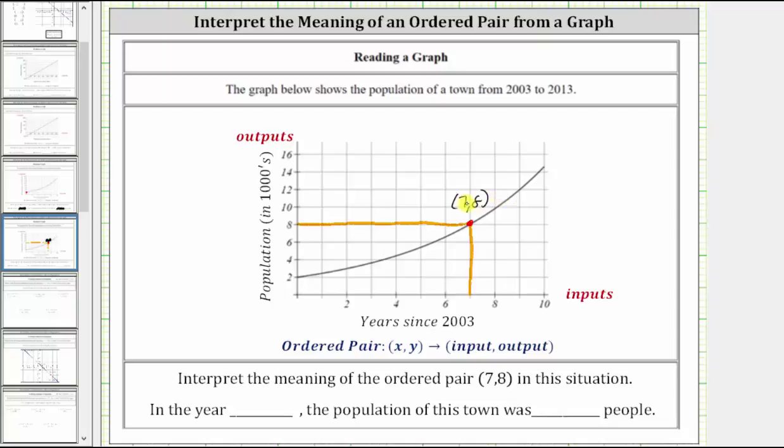So again, the 7 represents the number of years since 2003. 2003 plus 7 is 2010, so the year is 2010, and the output of 8 represents a population of 8,000.